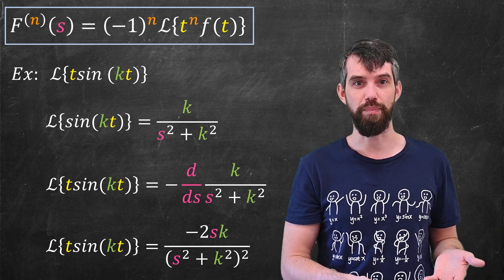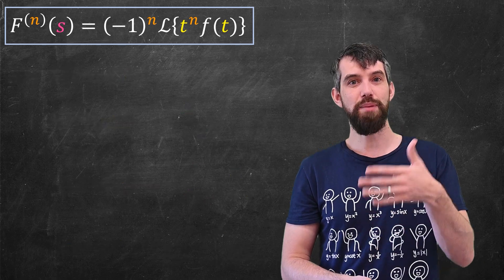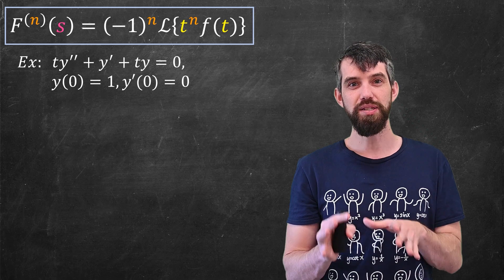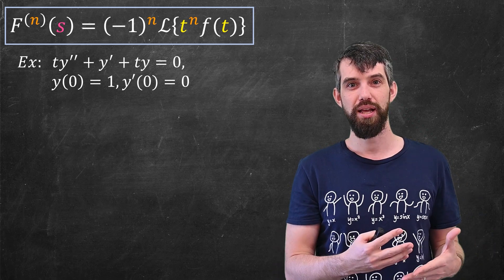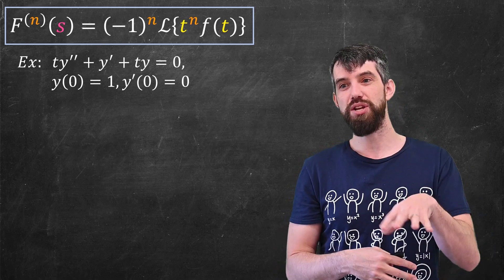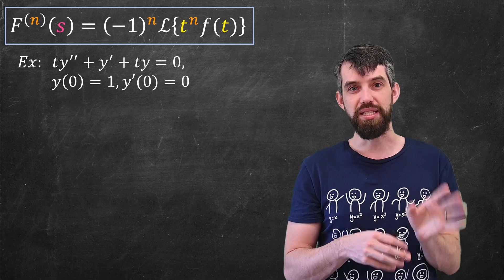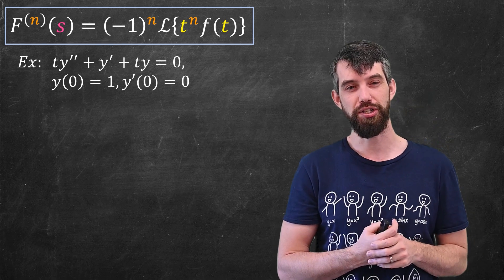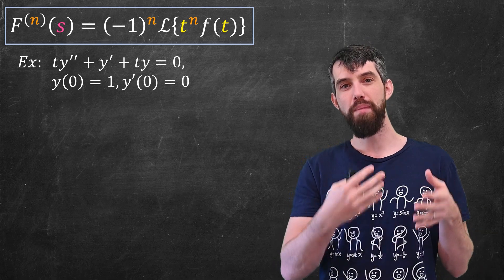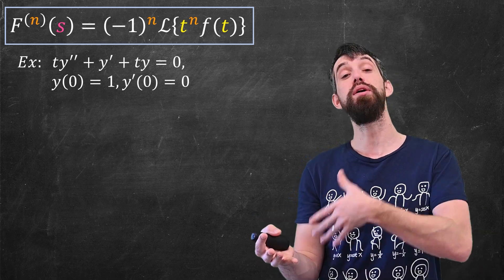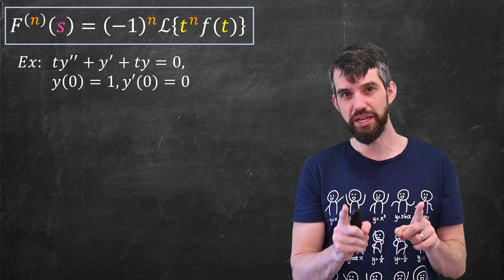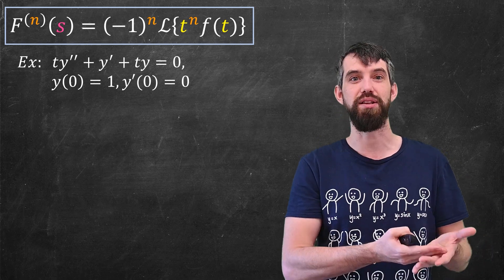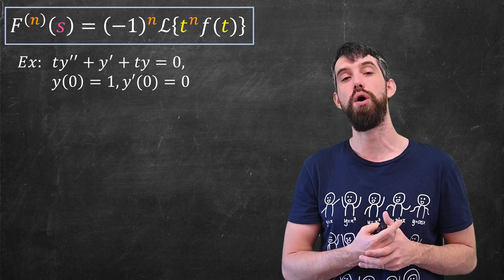Let's see a second example. Here I actually want to begin with a differential equation — a very famous one called the Bessel equation. It is t times the second derivative plus the first derivative plus t times y itself, all equal to zero, with some initial conditions. Note that while many differential equations in this series could be done by other methods, this one cannot be handled by our previous methods such as constant coefficients — this is not constant coefficients.